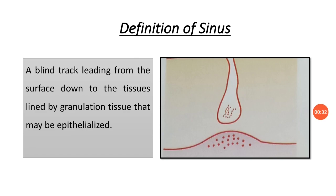The definition of sinus: a blind track leading from the surface down to the tissues, lined by granulation tissue that may be epithelialized. Sinus is an abnormal blind track. Here we deal with abnormal because normally many sinuses are present in the body, like the paranasal sinuses — those are anatomical sinuses — while here we are dealing with the abnormal, pathological sinus.